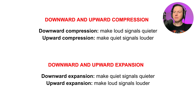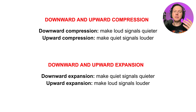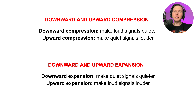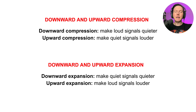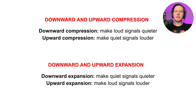Let's take a look at downward and upward expansion. Downward expansion makes quiet signals quieter — think about when you use a noise gate. You typically use a noise gate on things like vocals or drums when you want to reduce the background noise. You set the threshold and then anytime the noise falls below that threshold, it is pushed down even further so that the vocals or drums you want will stand out more. Upward expansion is going to make loud signals louder: anytime a signal passes above a threshold, that signal is made louder, therefore increasing the dynamic range.